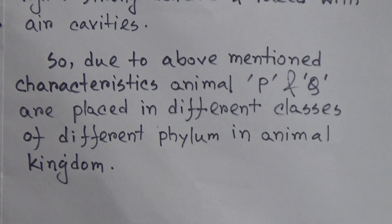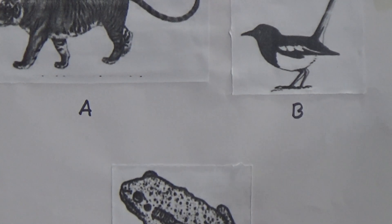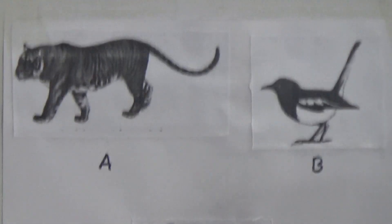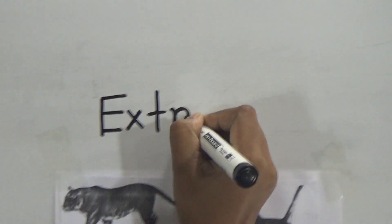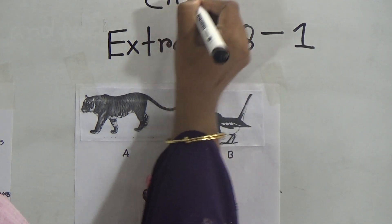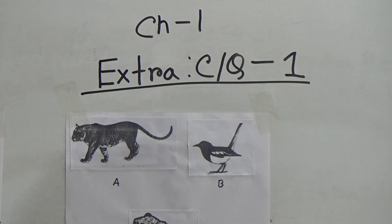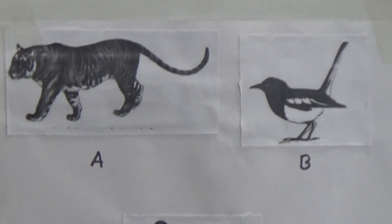We have finished creative question number 1 from our book. Now let's see the extra creative question. I will provide the question here and discuss it, but you have to do this as your SW. This is extra creative question 1 from chapter 1. There are three pictures given — all three are from the animal kingdom. The first is from Class Mammalia, B is from Class Aves, and C is from Class Amphibia.